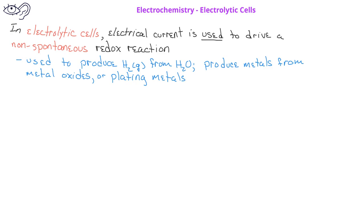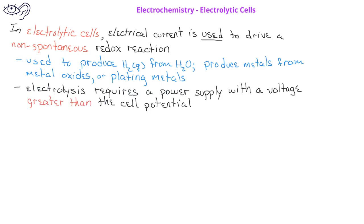The voltage required for electrolysis depends on the specific half-reactions involved. The power source, or battery, must provide a voltage greater than the cell potential in order to drive the reaction in a non-spontaneous direction.